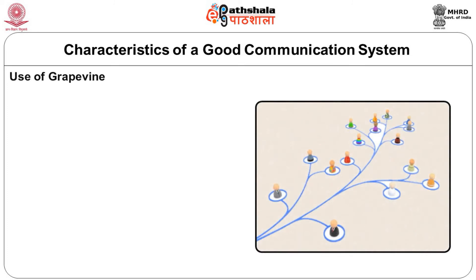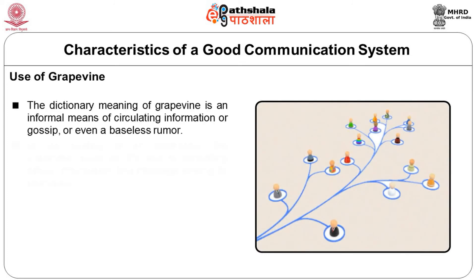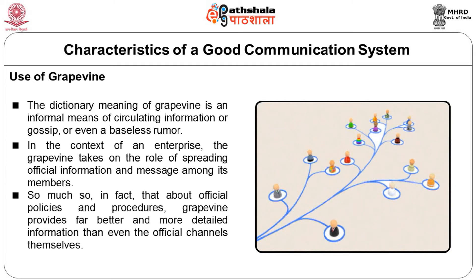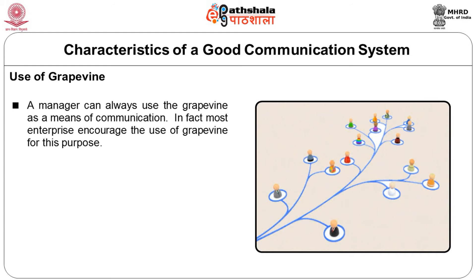The next characteristic is the use of grapevine. The dictionary meaning of grapevine is an informal means of circulating information, gossip, or even a baseless rumor. In an enterprise, the grapevine takes on the role of spreading official information and messages among its members — so much so that about official policies and procedures, grapevine provides far better and more detailed information than even the official channels themselves can. A manager can always use the grapevine as a means of communication.